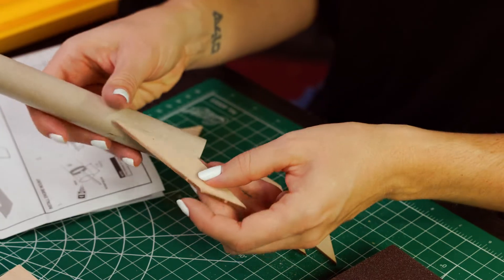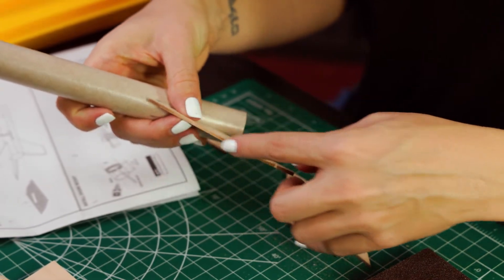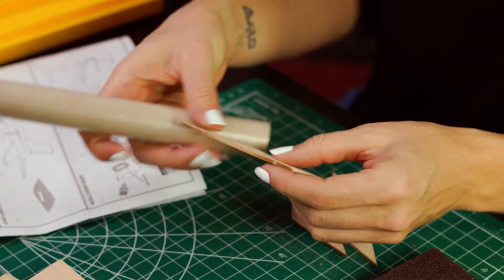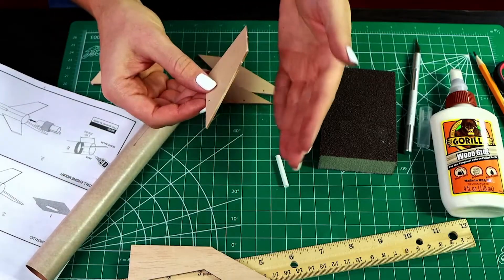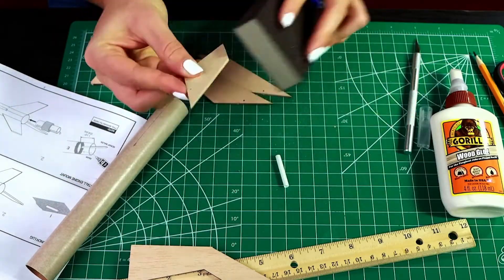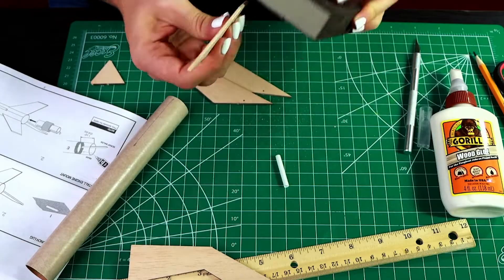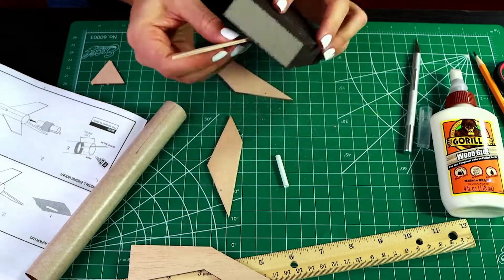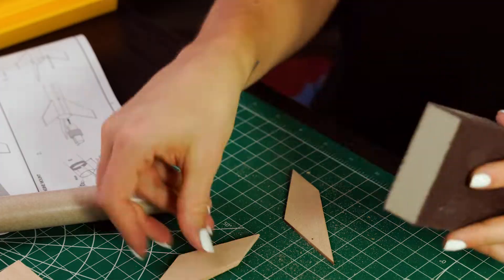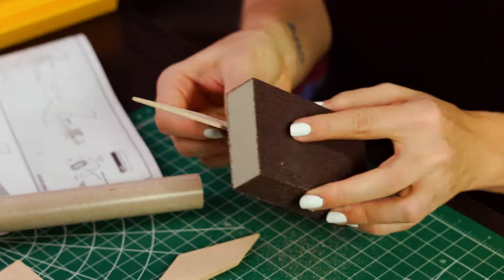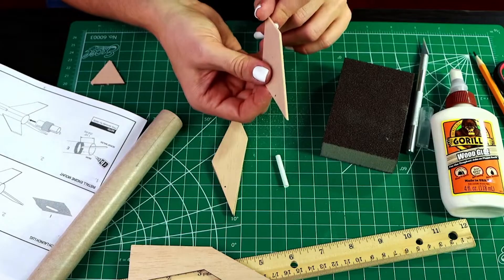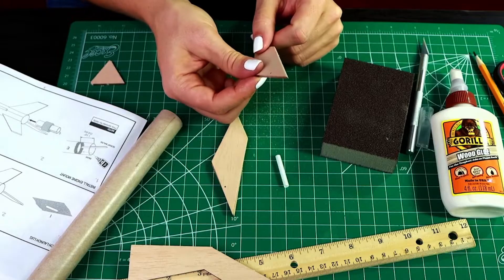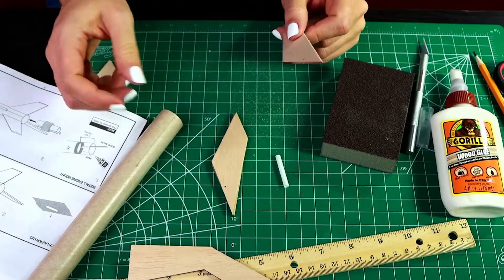For improved aerodynamics, you can also round the edges of just your leading edge. So if you imagine this is on the rocket, the edge that will be cutting through the air, you can actually sand that to have a rounded finish. Now that you have your rounded edges, your fins are ready to attach to the body tube.